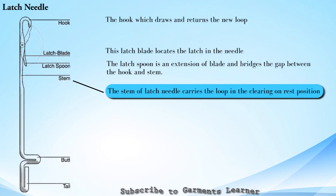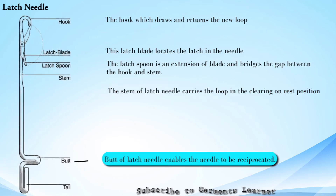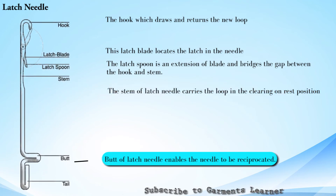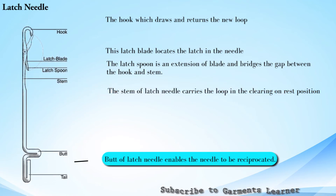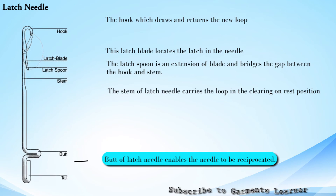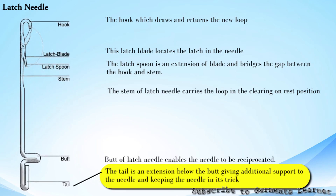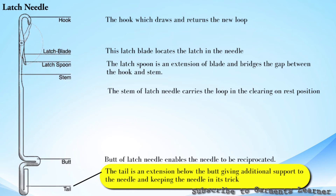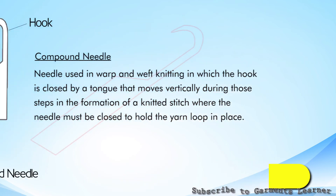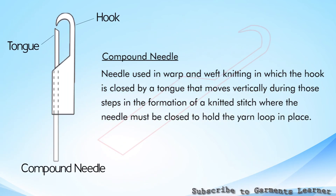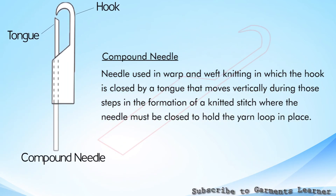The stem of the latch needle carries the loop in the clearing or rest position. The butt of the latch needle enables the needle to be reciprocated. The tail is an extension below the butt, giving additional support to the needle and keeping the needle in its trick.